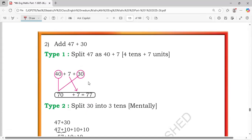Next, 47 plus 60. First add 40 plus 30, that means 70 plus 7, 77 is the answer.